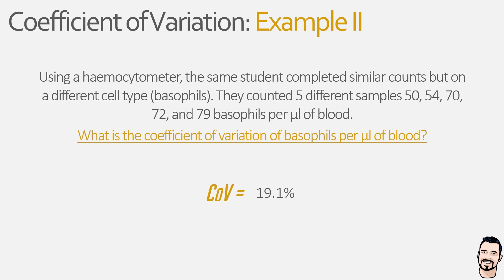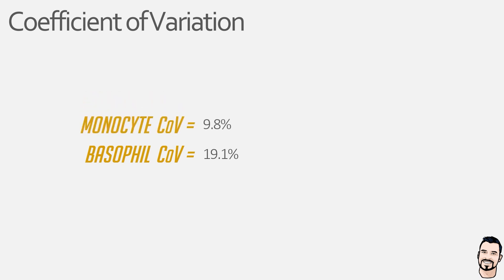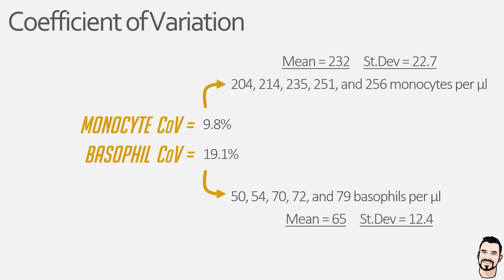Now this expertly demonstrates why the coefficient of variation is useful. If we compare the coefficient of variation of basophils per microliter from our second example to the coefficient of variation of monocytes from our first example, we can see they differ — with the CV for basophils being approximately double that of monocytes. Now if we were to bring up the raw data, calculated means, and standard deviations, we can start to see a few things.